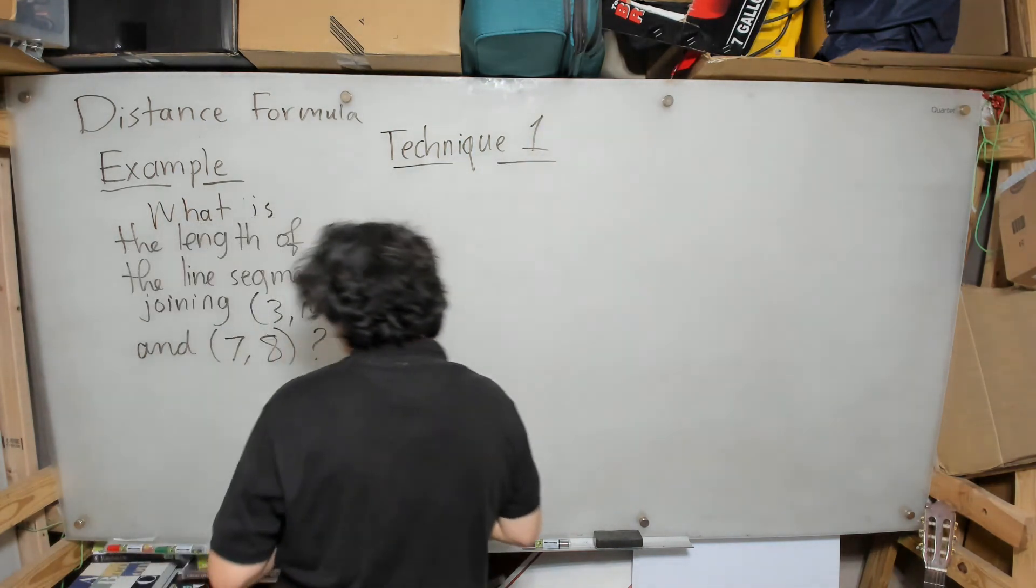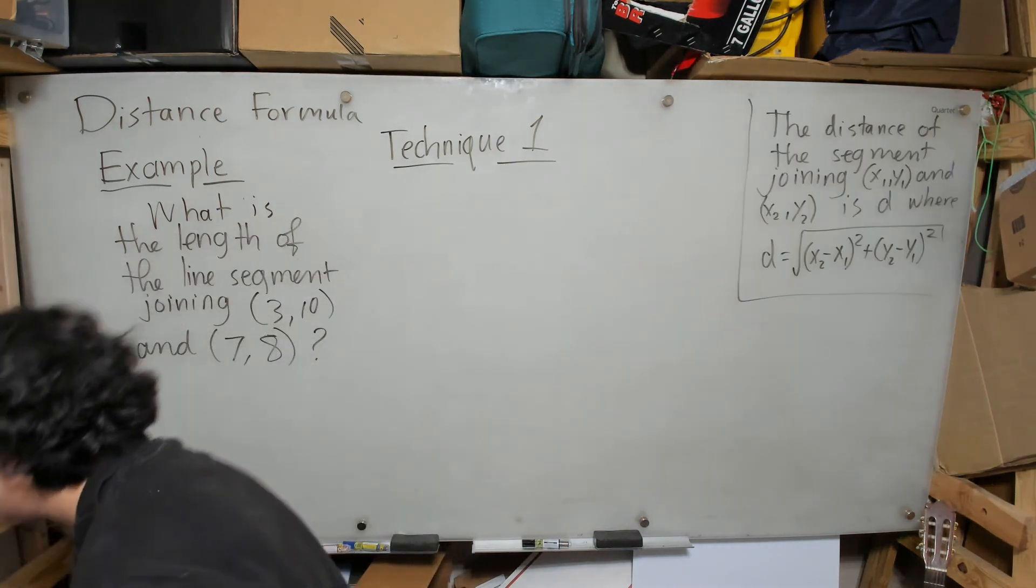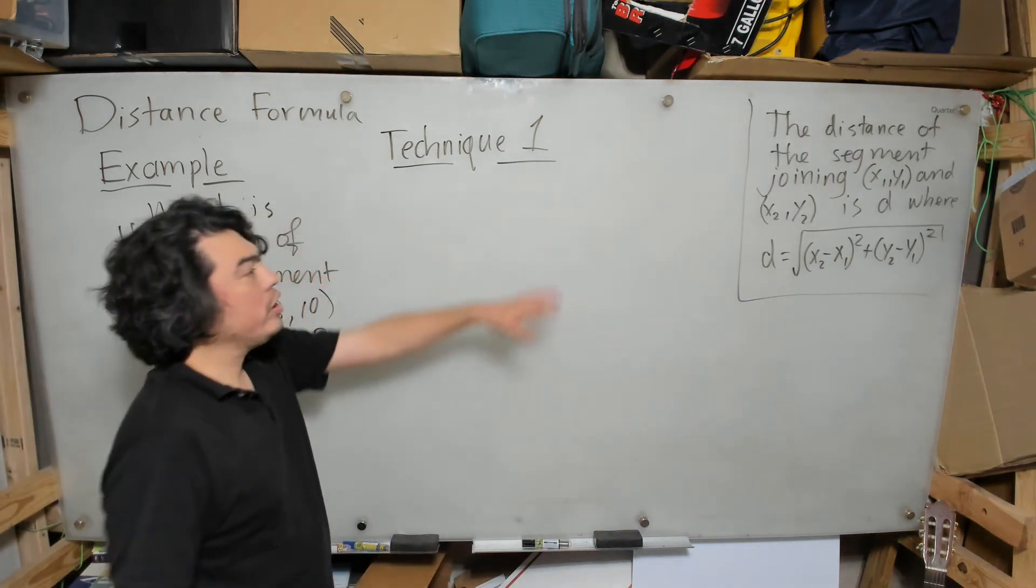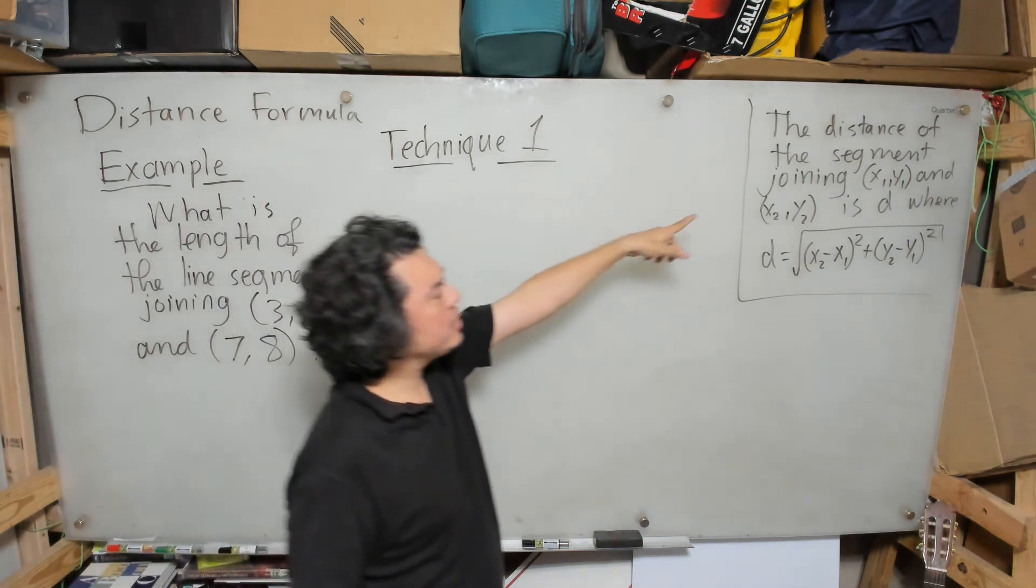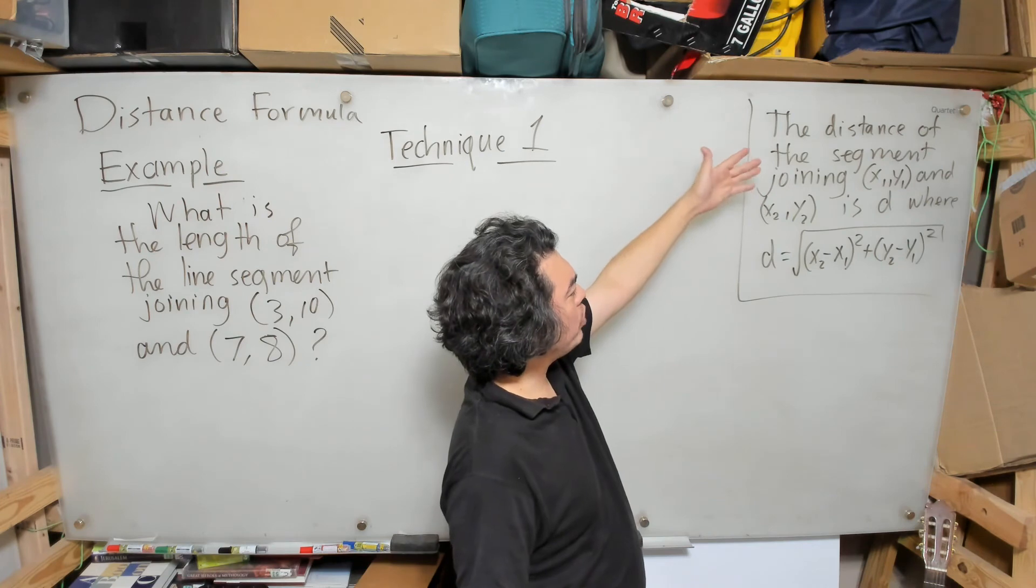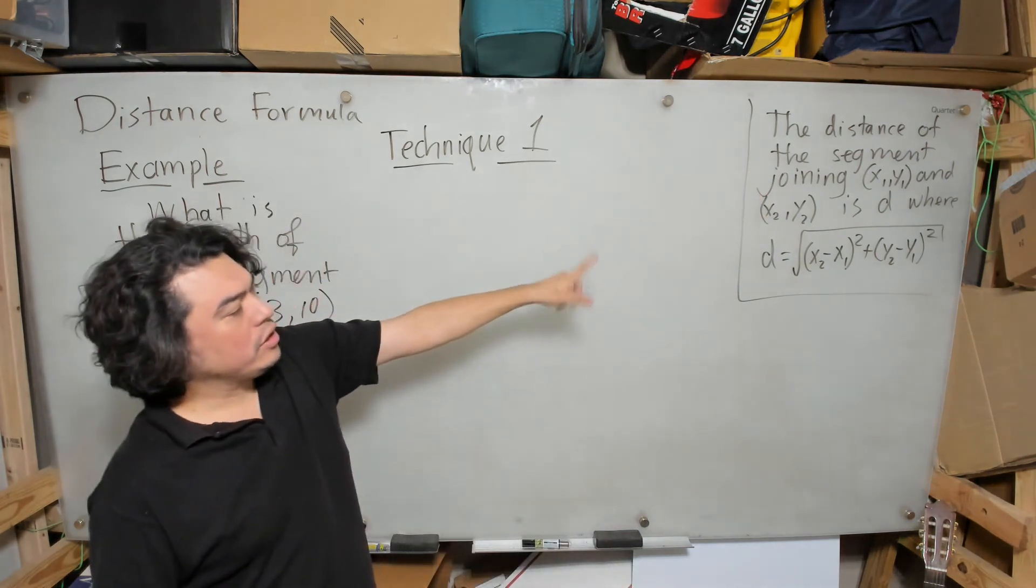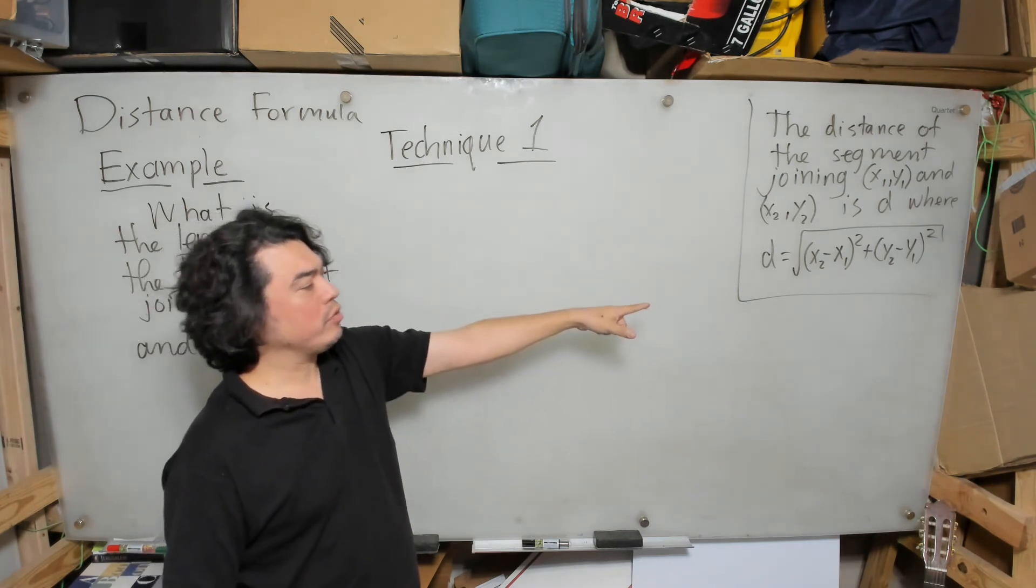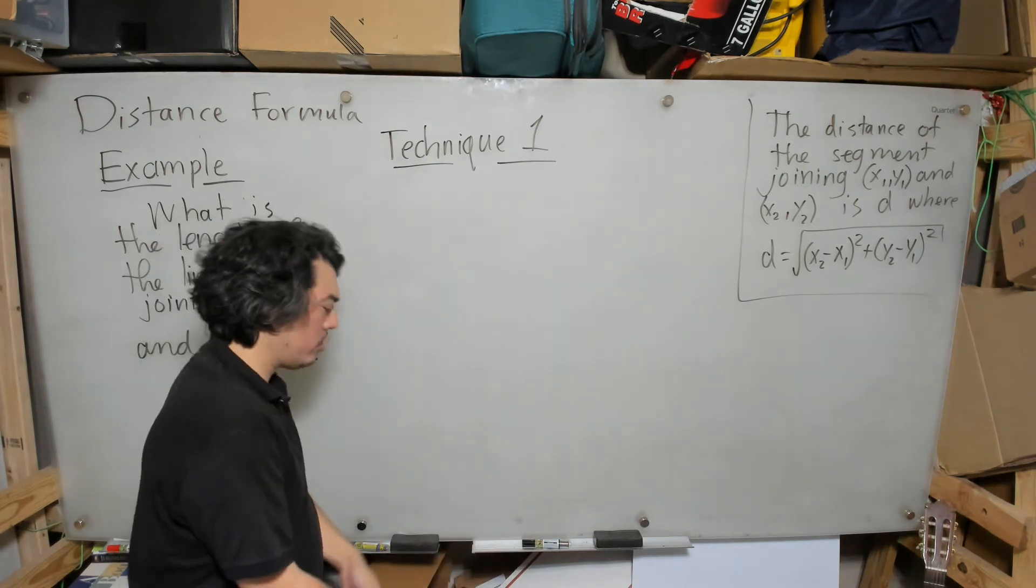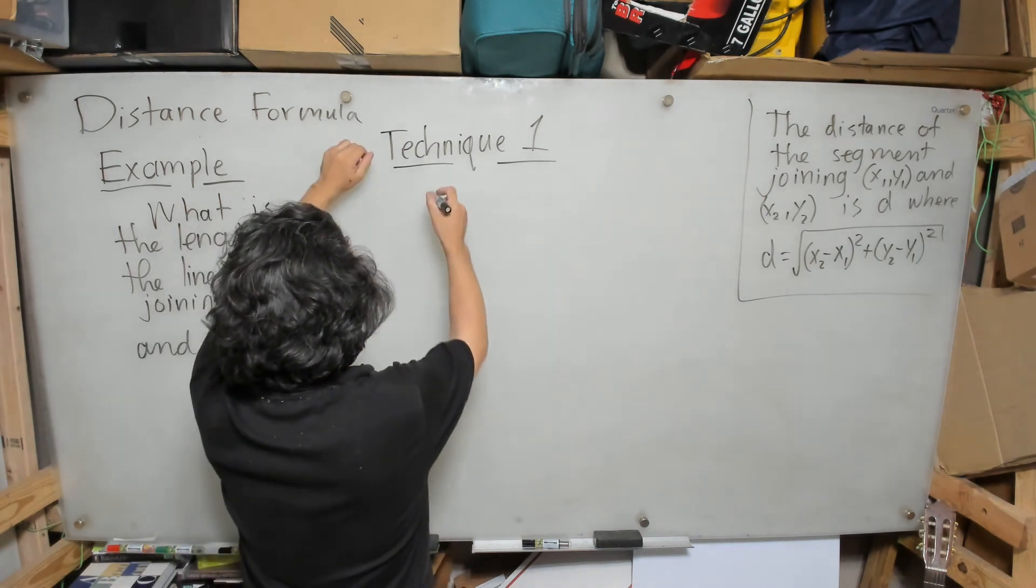So we recall here our distance formula, that the distance of the segment joining (x₁,y₁) and (x₂,y₂) is d, where d is the square root of (x₂ - x₁)² plus (y₂ - y₁)².